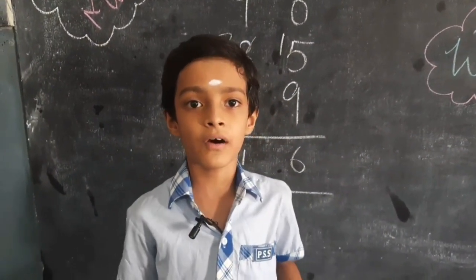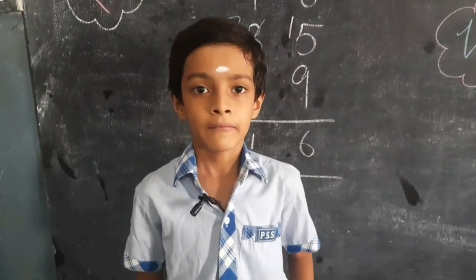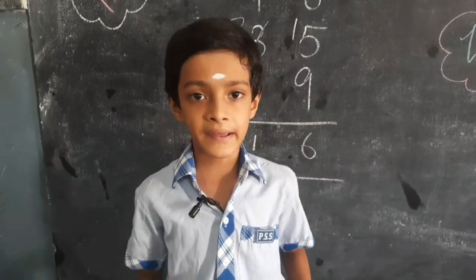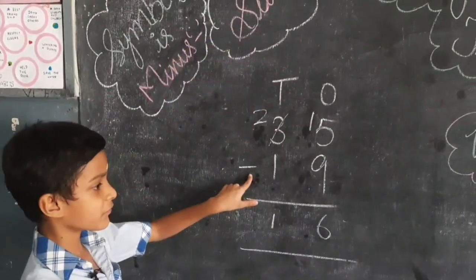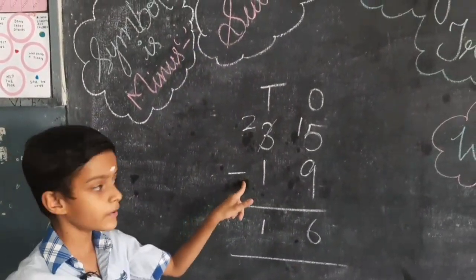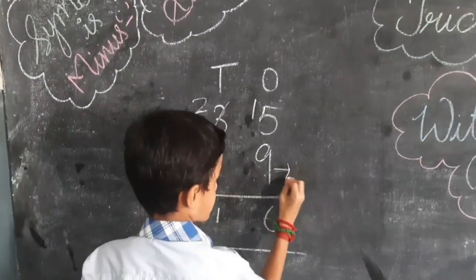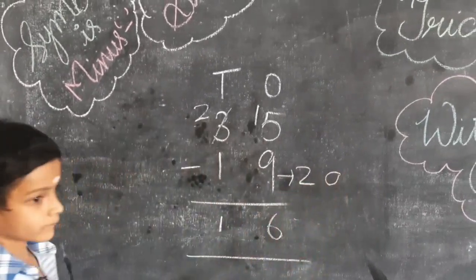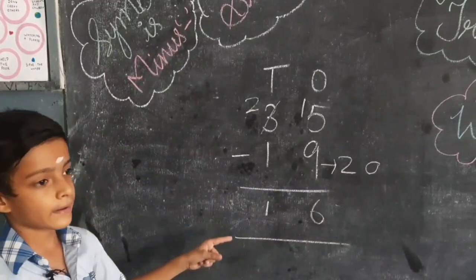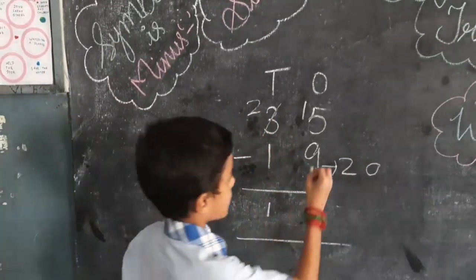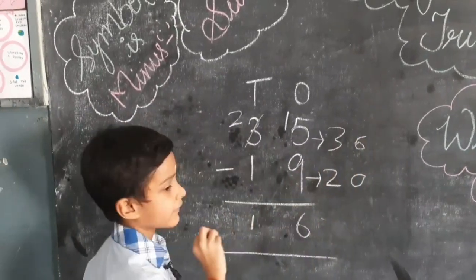Borrowing is difficult for some of us to do. Let us do subtraction easily without borrowing with this simple trick. Take the same example: 35 minus 19. Let us focus on the number 19. Find out the nearest ten of 19, which is 20. Calculate 20 minus 19 — the difference is 1. Add this 1 to 35, so 35 will become 36.